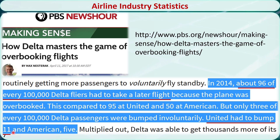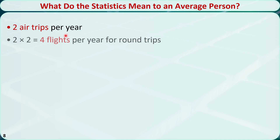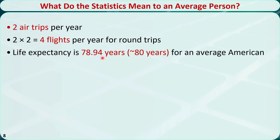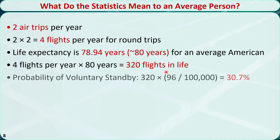What do these statistics mean to an average person? On average, I travel 2 times every year by air. If we consider round trips, there will be 4 flights for me each year. The life expectancy is 78.94 years for an average American — let's round it up to 80 years. If I live to age 80, I will be involved in 320 flights in my whole life. Using the worst-case scenario, the probability of me being put on voluntary standby in my whole life is 320 times the voluntarily bumped passenger rate of 96 over 100,000, which equals 30.7% — a relatively moderate number.